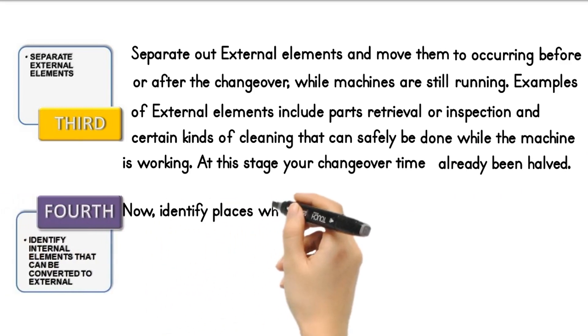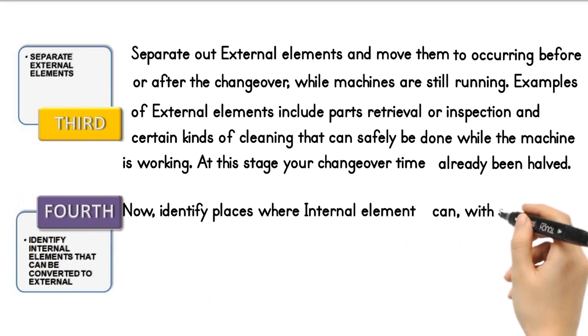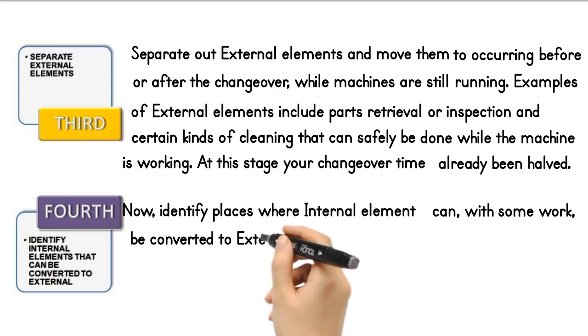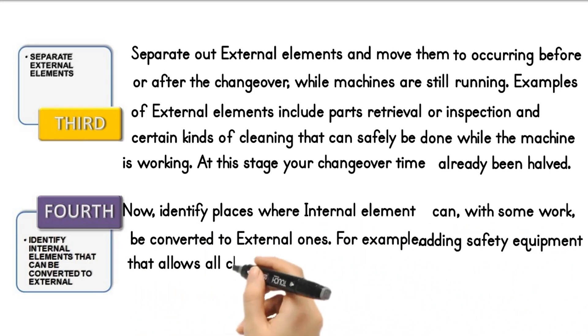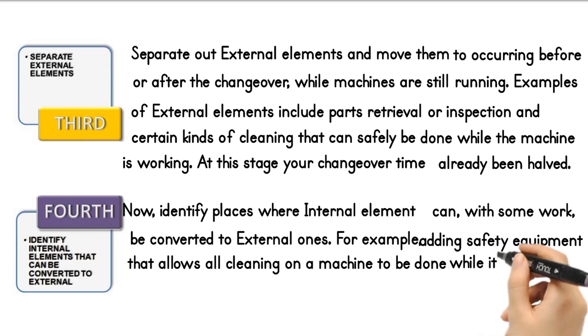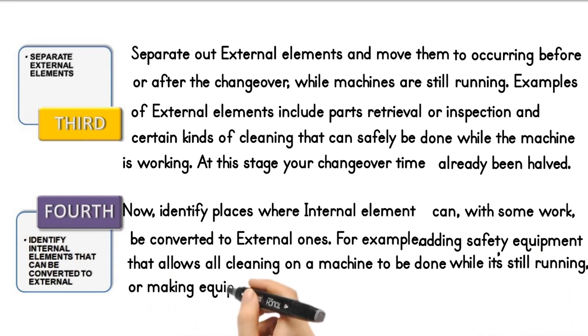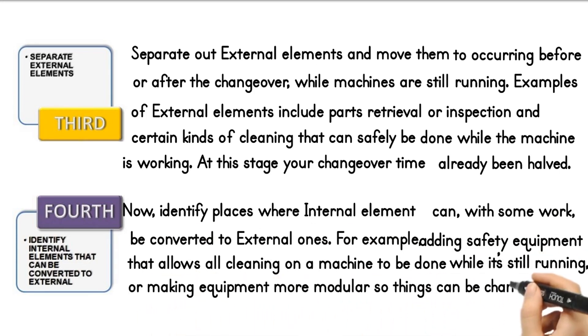Fourth step: Now identify places where internal elements can, with some work, be converted to external ones. For example, adding safety equipment that allows all cleaning on a machine to be done while it's still running, or making equipment more modular so things can be changed out for different jobs much more quickly.